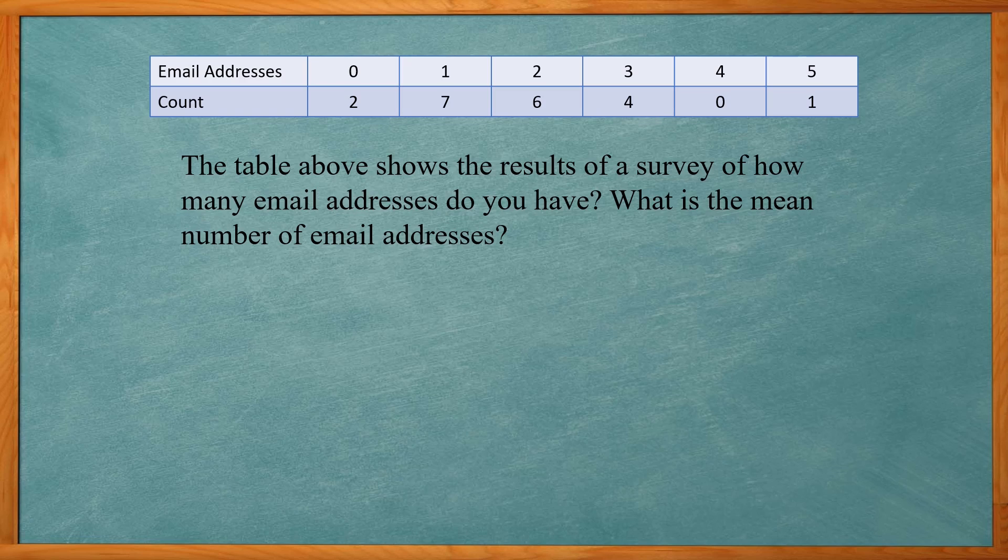What is the mean number of email addresses? If we look at our table here, we have two people who had zero email addresses, seven people who had one, six people who had two, four people who had three email addresses, and zero people had four.